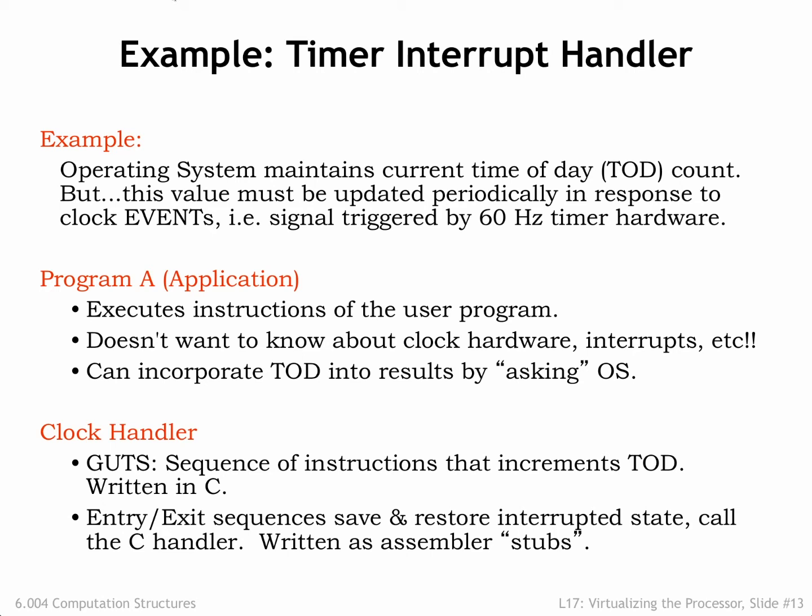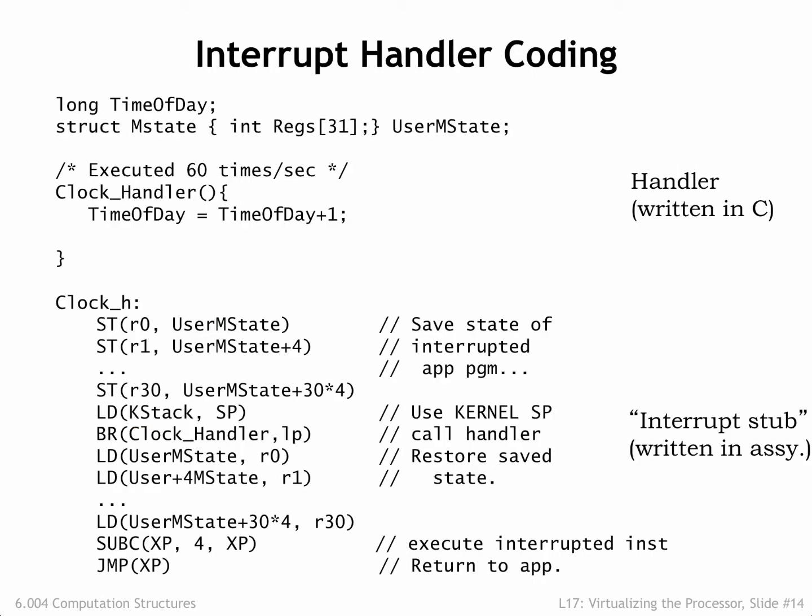The clock handler code in the OS starts and ends with a small amount of assembly language code to save and restore the state. In the middle, the assembly code makes a C procedure call to actually handle the interrupt. In C we find the declarations for the time of day data value and the structure called userMState that temporarily holds the saved process state. There's also the C procedure for incrementing the time of day value. A timer interrupt executes the BR instruction at location 8, which branches to the actual interrupt handler code at clock_handler.